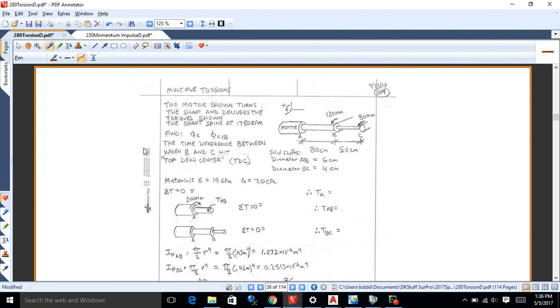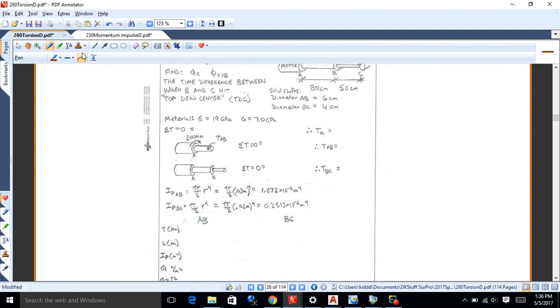So this is just like, if you remember, doing axial deformation when we had more than one force. What we had to do was find the reaction, and we had to find the force in each section of the bar we were looking at. Find its delta, and then add them all together. Well, it's the same sort of thing with torsion, okay?